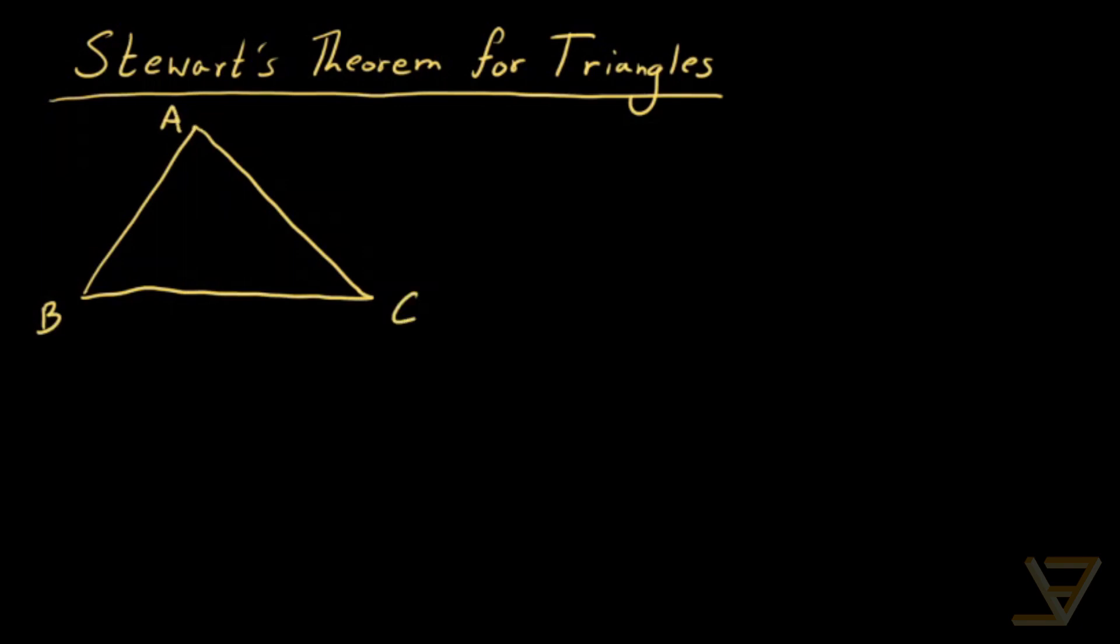And a cevian is a line segment like this, where one vertex is on a vertex of the triangle and the other vertex is on the opposite side here. We'll call this endpoint D.